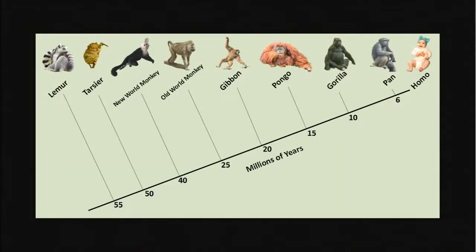Here we have a graphical representation of the evolutionary history of primates. The representative for Homo sapiens may or may not be my six-month-old daughter — I had to fit her in somewhere. The bottom bold line or trunk indicates time in millions of years from farthest away to most recent. Each perpendicular intersection or node represents the last common ancestor that branched species had with us. For instance, humans shared the last common ancestor with lemurs approximately 55 million years ago.